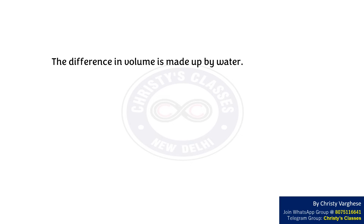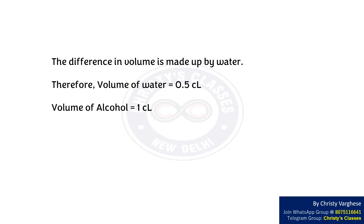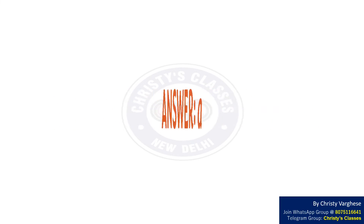Therefore, volume of water equals 1.5 centiliter minus 1 centiliter, which equals 0.5 centiliter, and volume of alcohol equals 1 centiliter. Ratio of alcohol to water equals 1/0.5, which equals 2 to 1. Hence the right answer to the question is option A.